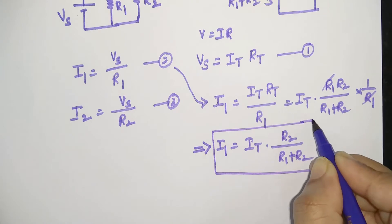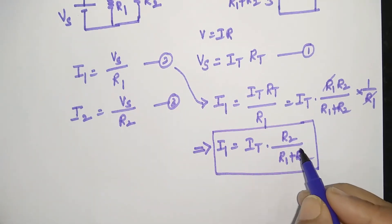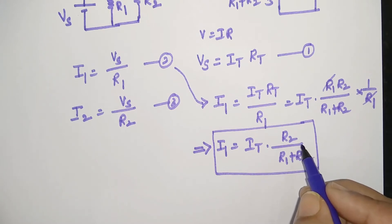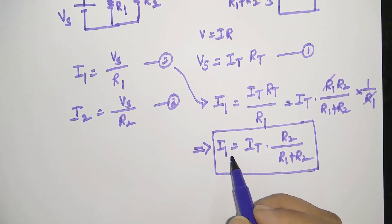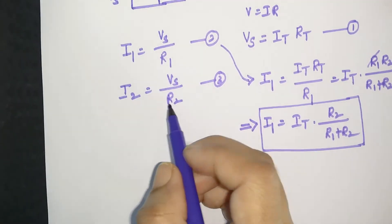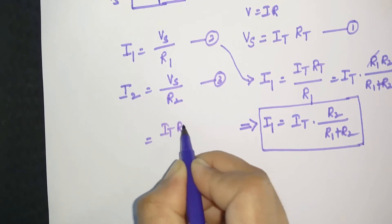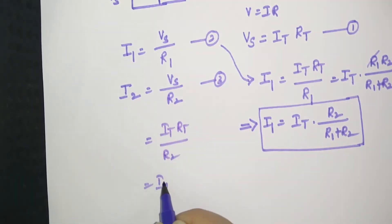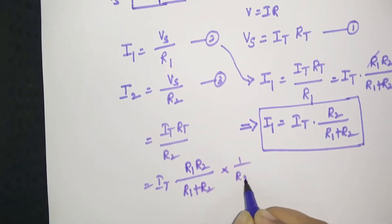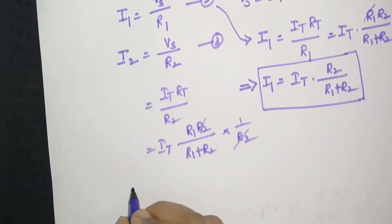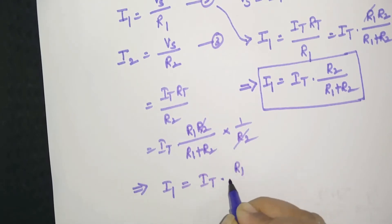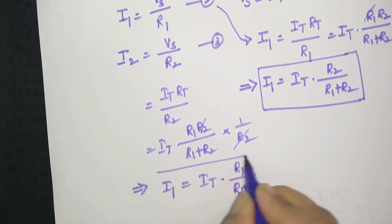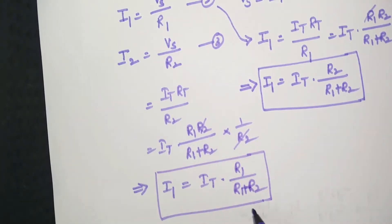This is the current division rule. In this relation you can observe there is no voltage term — without using any voltage, you can find the branch current I1. Similarly, for I2: I2 = IT · RT / R2 = IT · [R1·R2/(R1 + R2)] · (1/R2). R2 cancels, giving I2 = IT · R1/(R1 + R2).